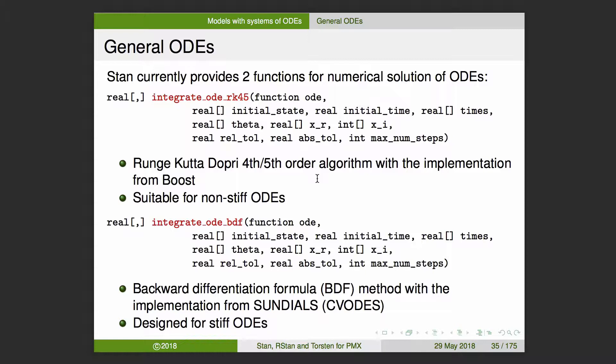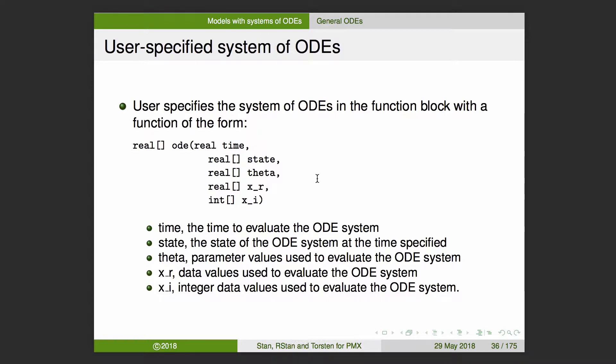Another one that should come out in the next version of Stan — I think it might be called integrate_ode_am — will use an Adams-Moulton method, also from the Sundials collection. It's for non-stiff equations but sometimes has some advantages over Runge-Kutta, so that will be available too. They use the same basic structure. To use these, the user has to specify a system of ordinary differential equations using a function with a specific signature in the functions block.